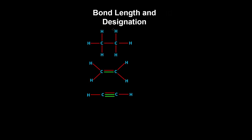Let's look at some of the properties of covalent bonds, using carbon-carbon as an example. In this ethane molecule, we have a single bond, and we call this a sigma bond, because the electrons overlap head-on. Out of the three, it has the longest length and the lowest bond energy, so it's easier to break apart.